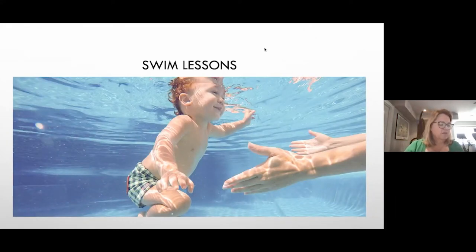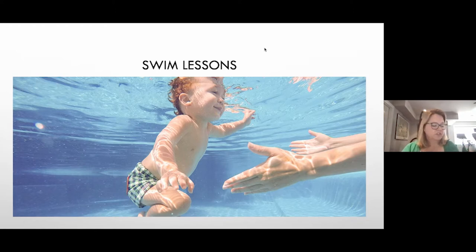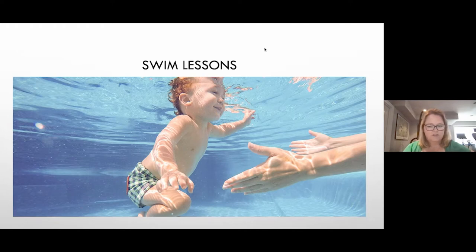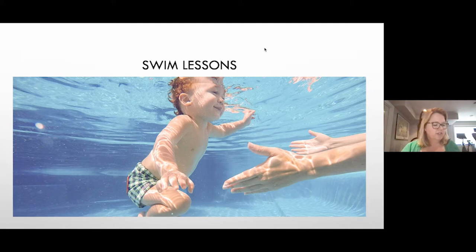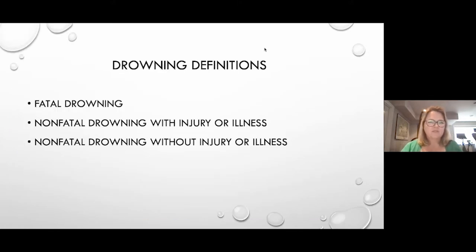The American Academy of Pediatrics long held that children aren't developmentally ready for swim lessons until age four, but just a couple of years ago updated that to over one year of age. There's been no increased drowning risk shown in children who received lessons and actually a decreased risk. The AAP now recommends any child over one year of age get swim lessons. Studies show 26% of drowning victims had not had swim lessons versus only 3% who had — a clear benefit.